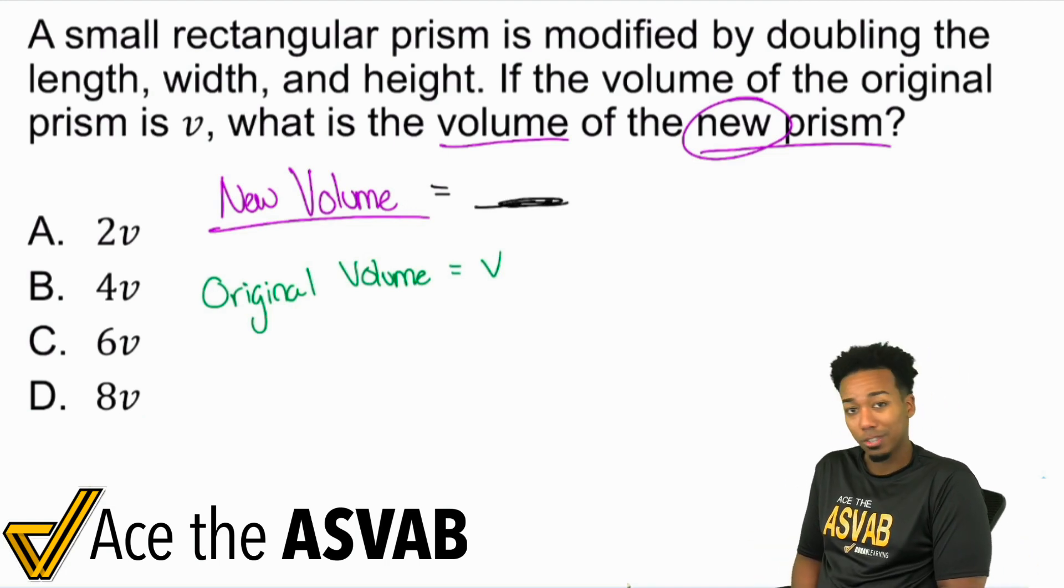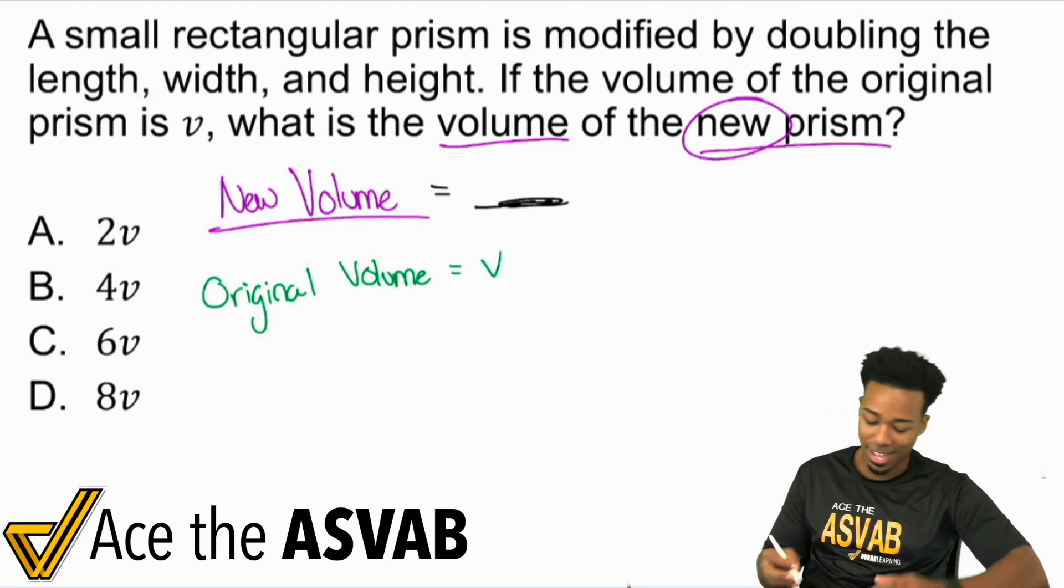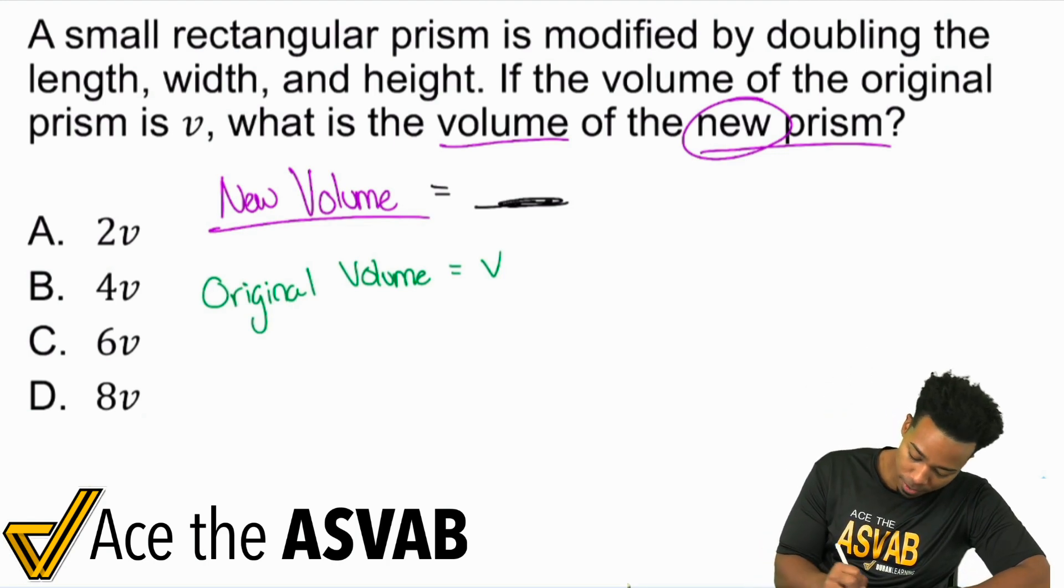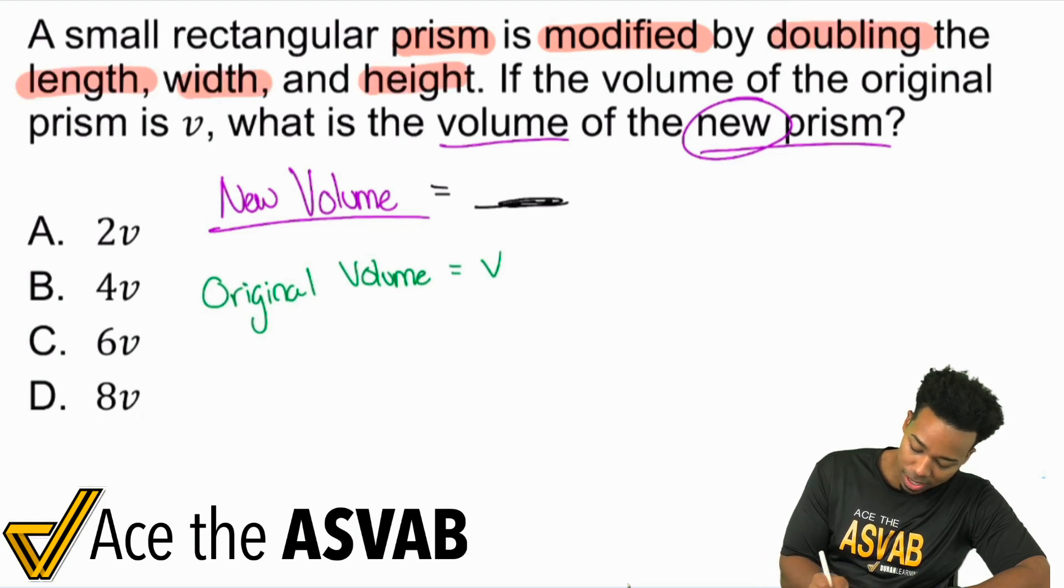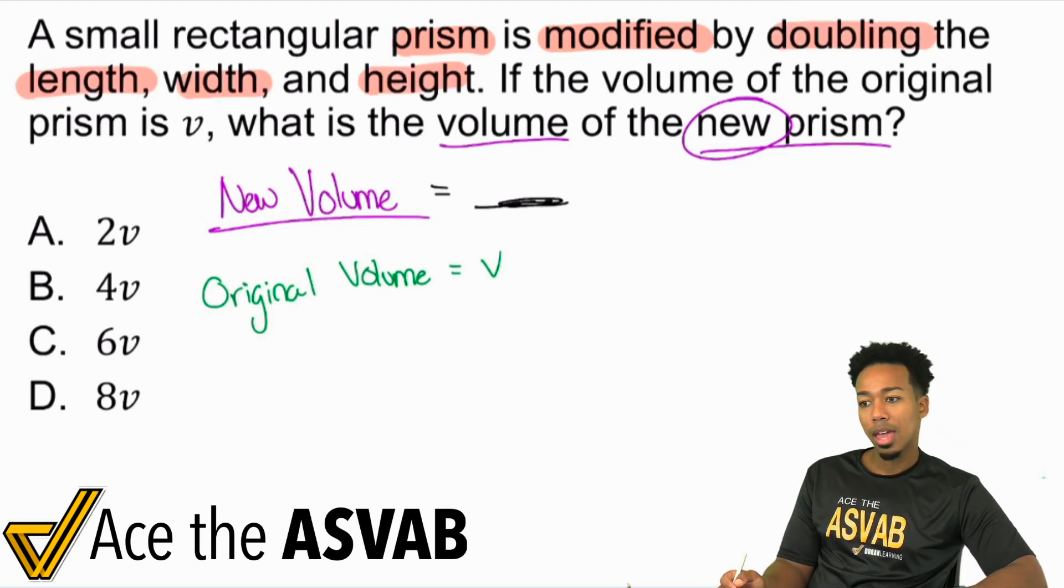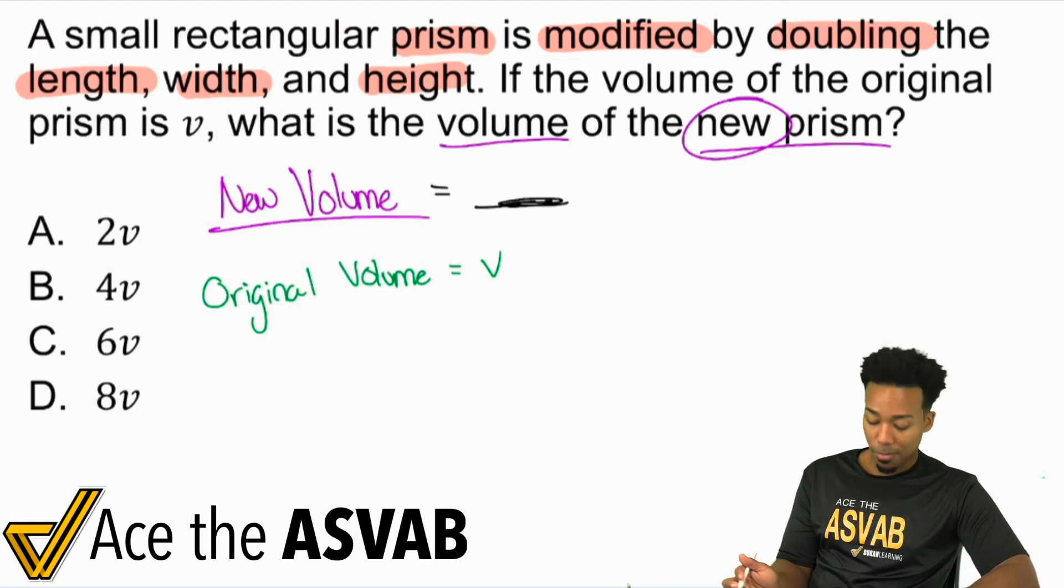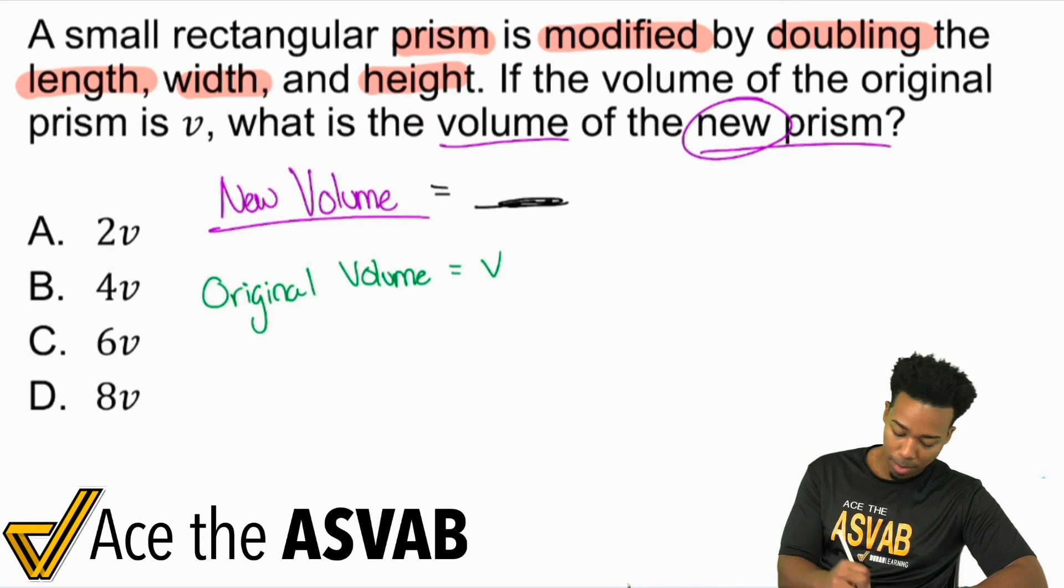The new volume equals what? I don't know what the new volume is, but I do have a relationship here. The rectangular prism is modified by doubling the length, width, and height. So what does that tell us? If you double everything from the prism, what happens to the volume?